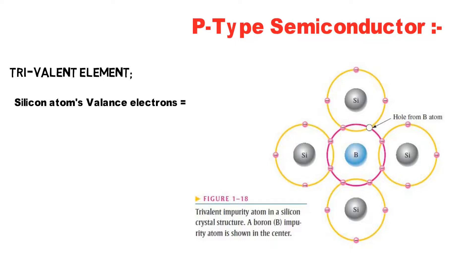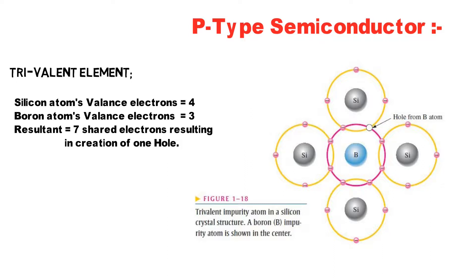All three of the boron atom's valence electrons are used in the covalent bonds, and, since four electrons are required, a hole results when each trivalent atom is added. Because the trivalent atom can take an electron, it is often referred to as an acceptor atom.